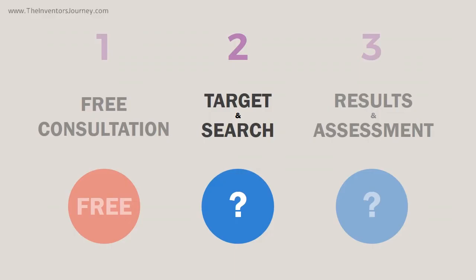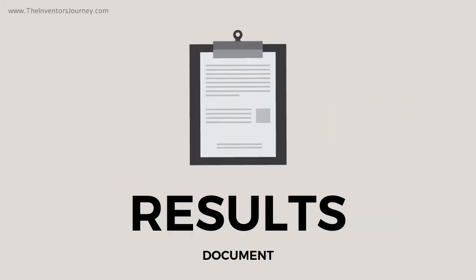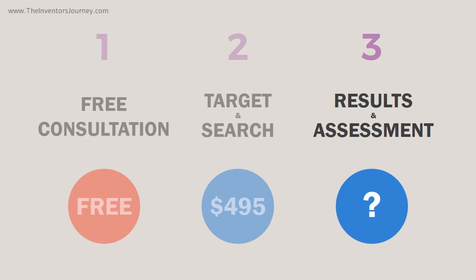Your first payment for getting all of this done is only $495, or £395 if you're a UK inventor. Once your results document is ready, I'll email you with a link for the second payment. For that, you get your Perfect Patent Search results document emailed to you, along with a video which explains how to read through any of the prior art found in your Perfect Patent Search. You also get an optional consultation with me to discuss the results, any questions, and to talk about your next steps in the inventor's journey if your invention gets through the Perfect Patent Search. The second payment is just $400, or £300 if you're a UK inventor.